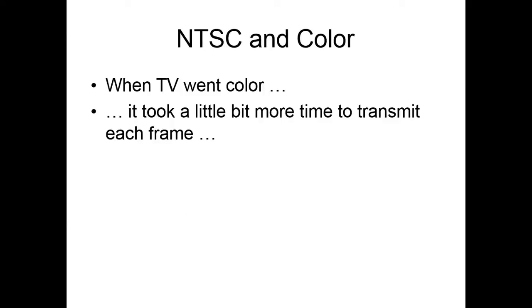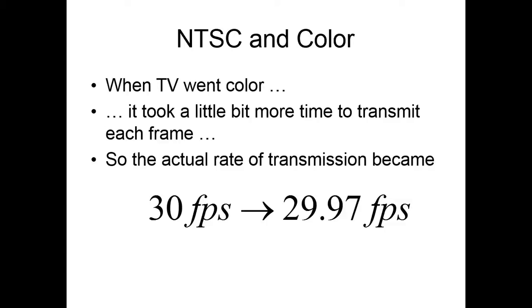But when TV went color, it took a little bit more to transmit each frame now that you had also to send the information for color. So we could not transmit 30 frames per second anymore. We could transmit at most 29.97 frames per second.